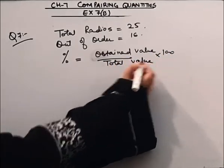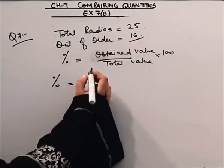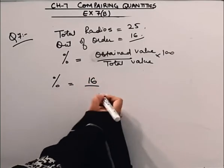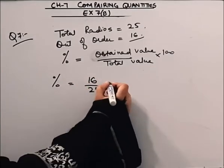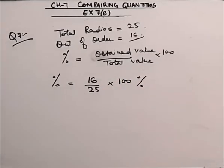To hum kya keringi isko? Yaha pher percentage kitne hai ho jai gi? Obtained value of out of order are? 16. 16 kharaab hai. Total are 25 into 100 kar dhingi. Percentage ka sign laga dhingi. Thik hai?